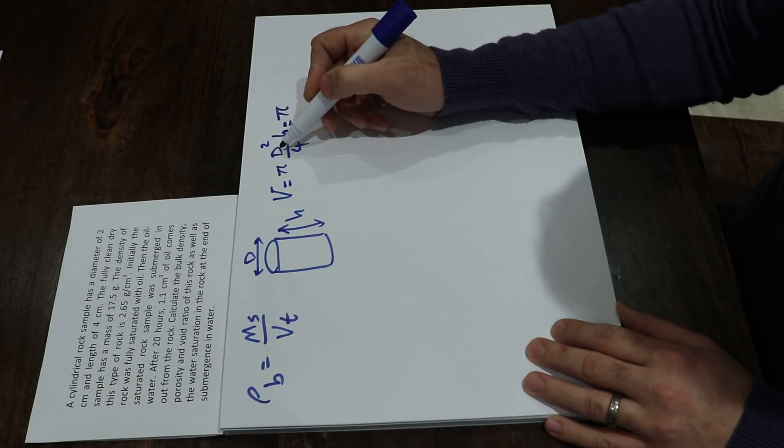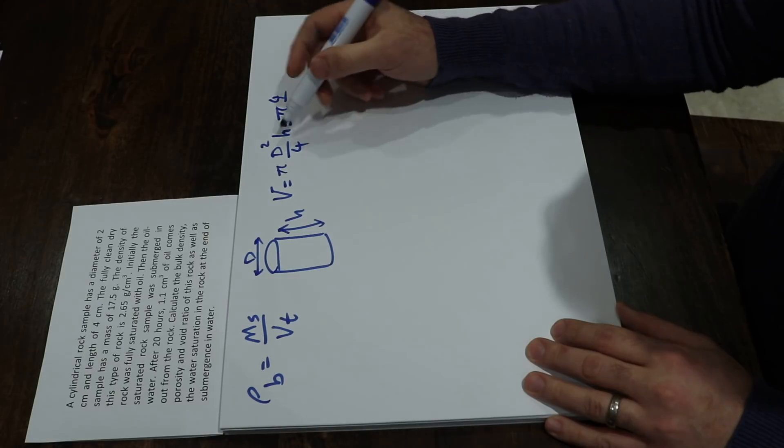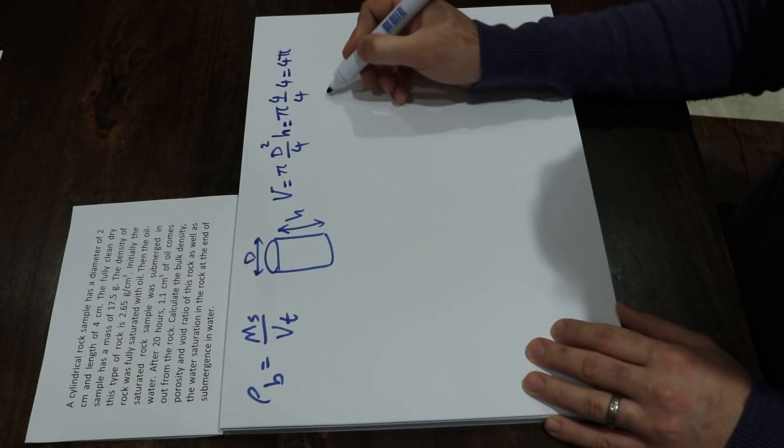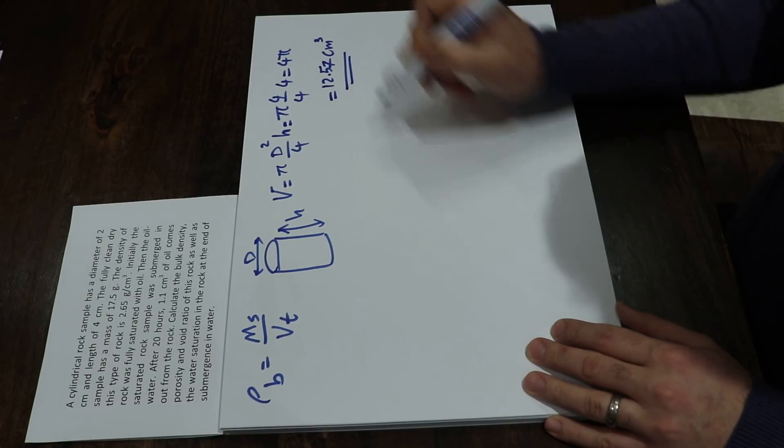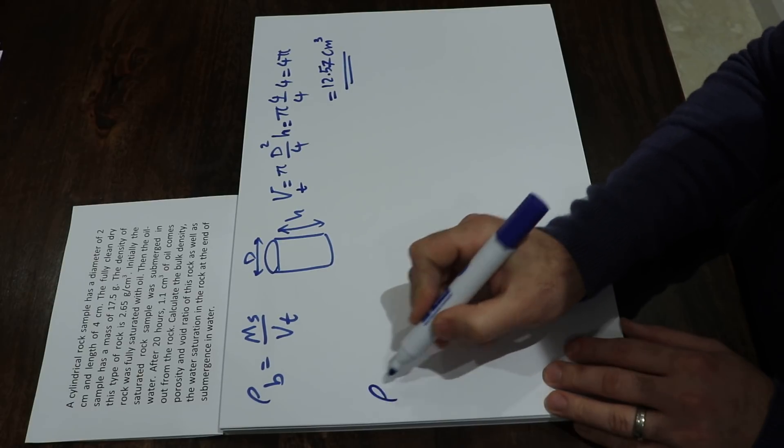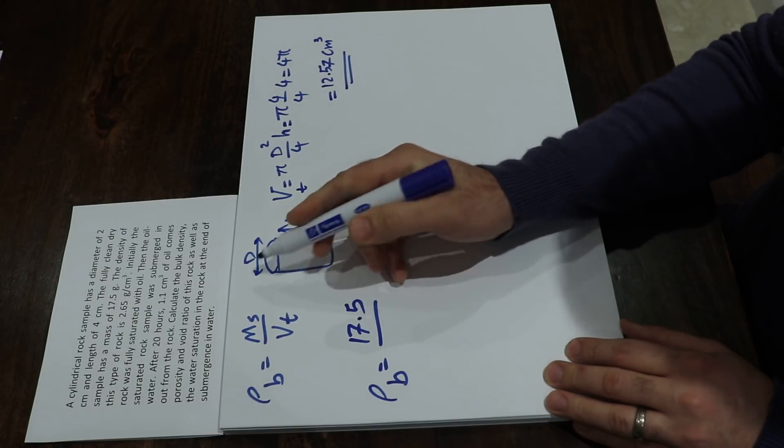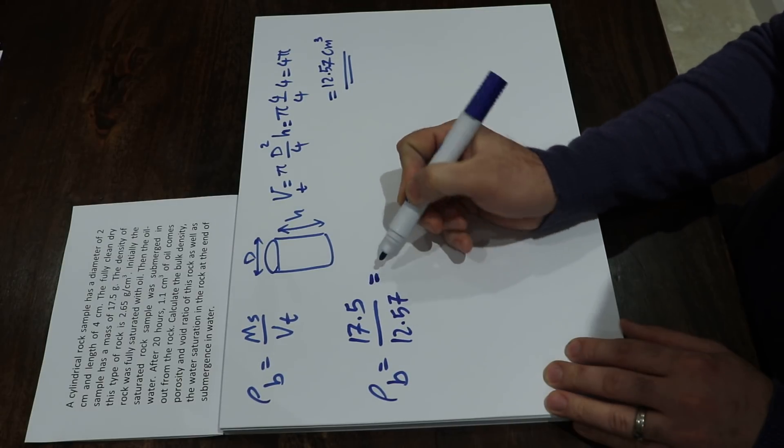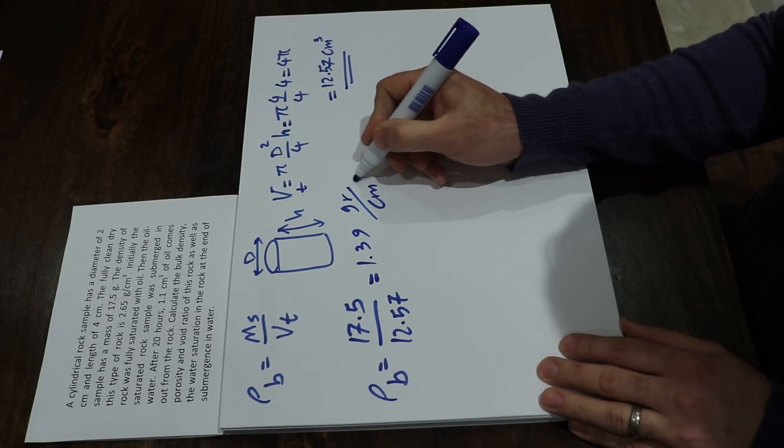We know that the volume of a cylinder V is equal to pi d squared divided by 4 times height, which will be equal to pi times 2 squared divided by 4 times height, that is 4 cm, which will be 4 pi. Which is equal to 12.57 cubic centimeters. So that is the total volume. Therefore, the bulk density will be equal to mass of solid, that is 17.5 divided by total volume, that is 12.57, which will be equal to 1.39 grams per cubic centimeter.